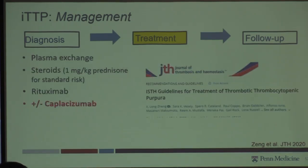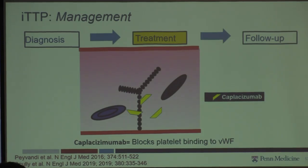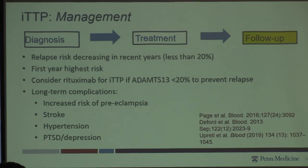We also have the only FDA-approved therapy, which is caplacizumab. I think of this medication as blocking platelet binding to von Willebrand factor. It's been a major advance for patients because it works very quickly. It is continued after a patient stops plasma exchange to prevent those early exacerbations — the scenario where you stop therapeutic plasma exchange and the platelet count falls again.